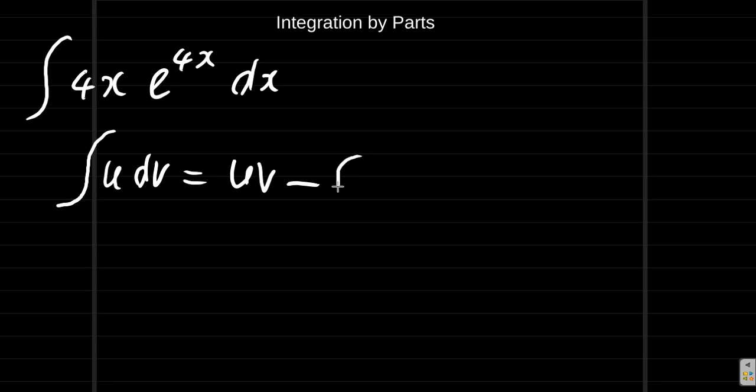uv minus the integral of v du, where u and dv are two functions. Now as we move from the left hand side u to the right hand side du, we're going to have to differentiate, so we decide which one we will use as u.